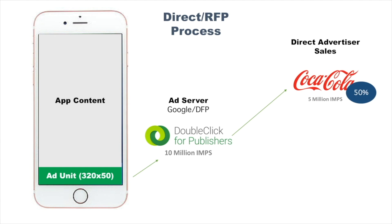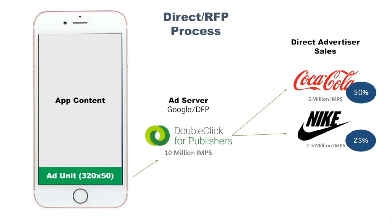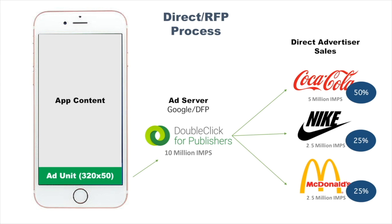Let's say I go to Coca-Cola and convince them to buy five million impressions every month — I've just sold 50% of my ads to one advertiser, but I still have five million more to go. I get in front of Nike and they agree to buy two and a half million, so now I've sold 75%. Then I go to McDonald's and they agree to buy the remaining two and a half million impressions. I've now done a direct deal with three advertisers and sold 100% of my ads for the month. This is great — you get the highest price possible with essentially no middlemen.